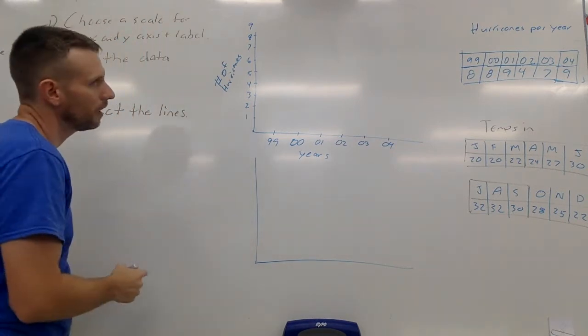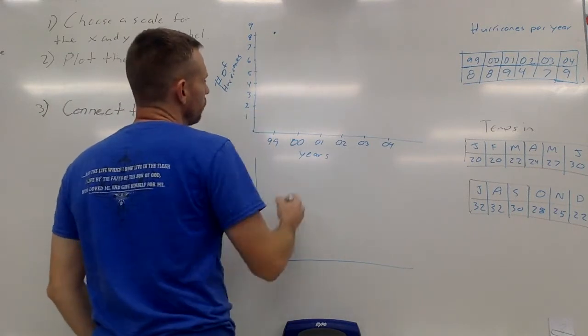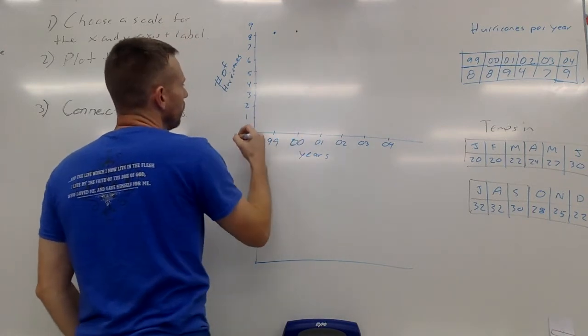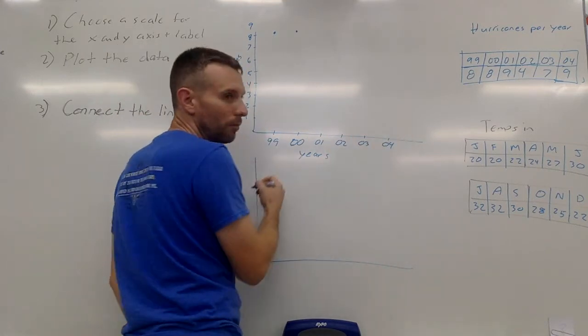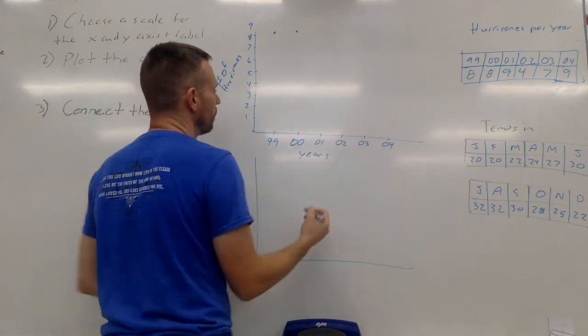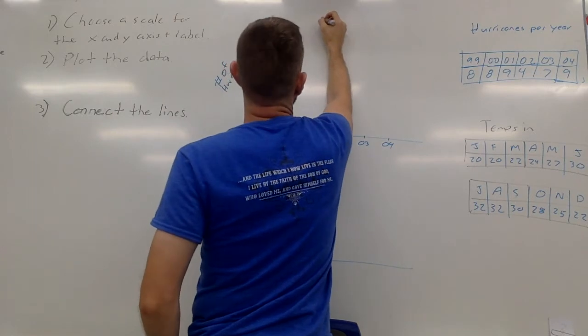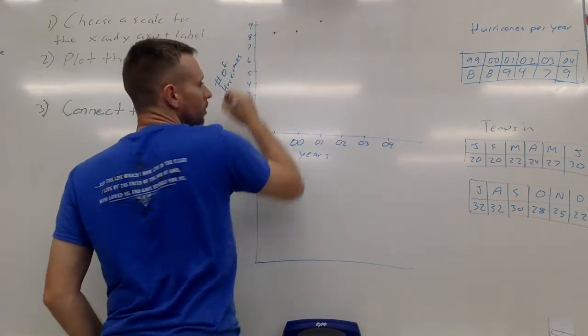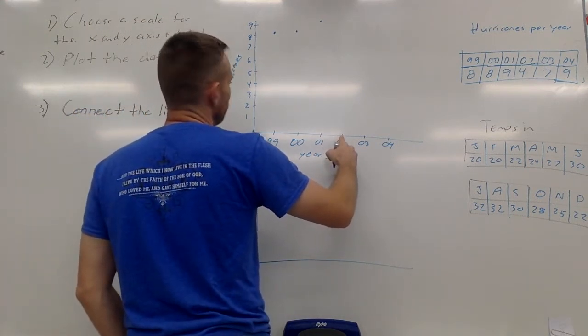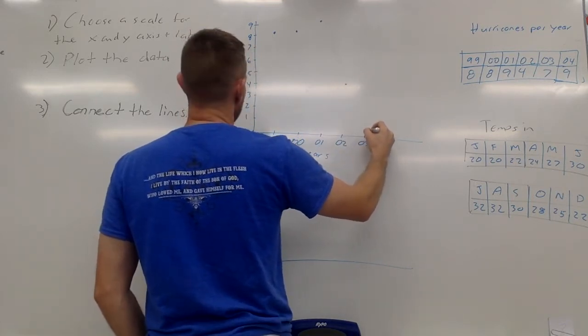Now I'm going to plot the data. In '99 there were eight hurricanes - I'm going to put a dot. In 2000 there were eight hurricanes. The spacing between these should all be the same. In 2001 there were nine hurricanes. Obviously if you do this on graph paper it's much easier to get everything lined up, and maybe you don't even need to use a ruler as much - you can use the graph lines and the graph paper.